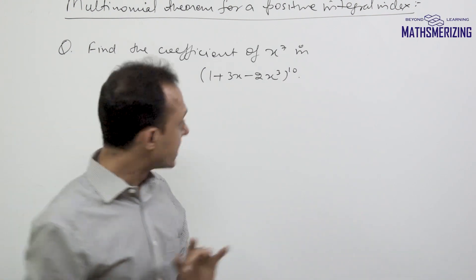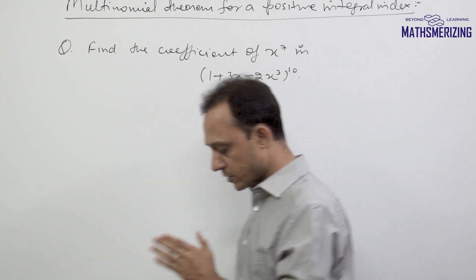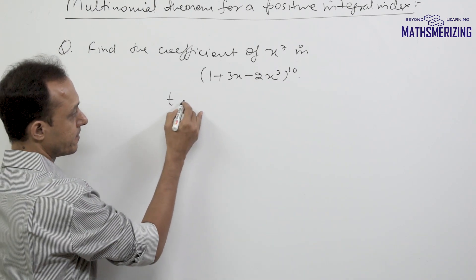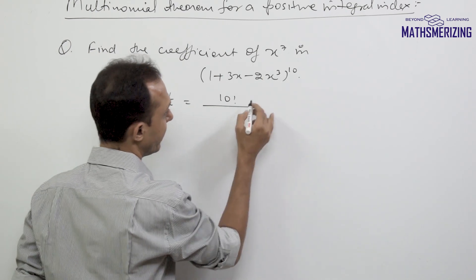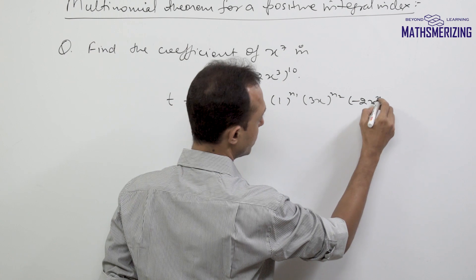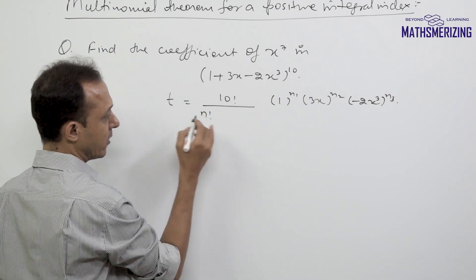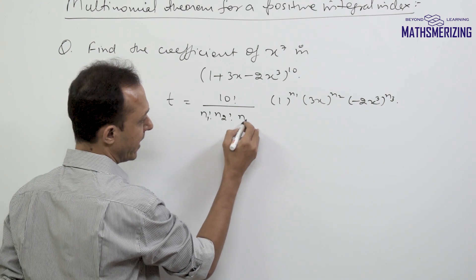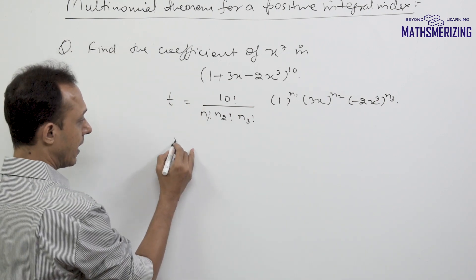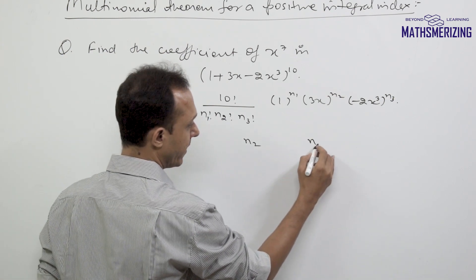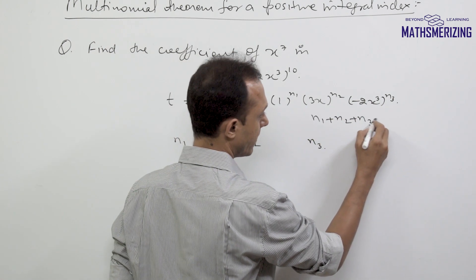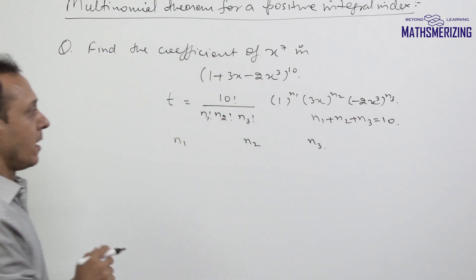Find the coefficient of x⁷ in the expansion of 1 plus 3x minus 2x³ to the power 10 using multinomial theorem. Writing the general term as factorial 10 divided by factorial n1, factorial n2, factorial n3 times 1 to the power n1, times 3x to the power n2, times minus 2x³ to the power n3. We need to find all combinations of n1, n2, n3 where n1 plus n2 plus n3 equals 10 and the power of x equals 7.